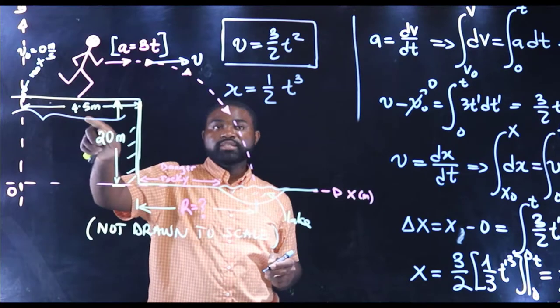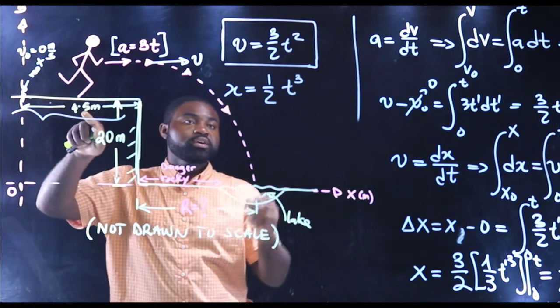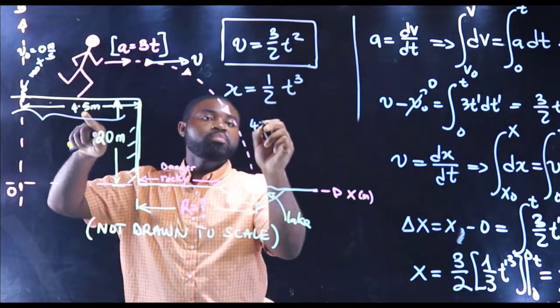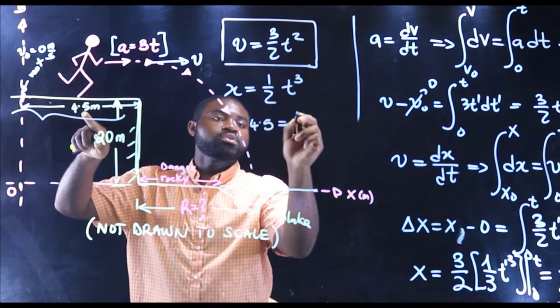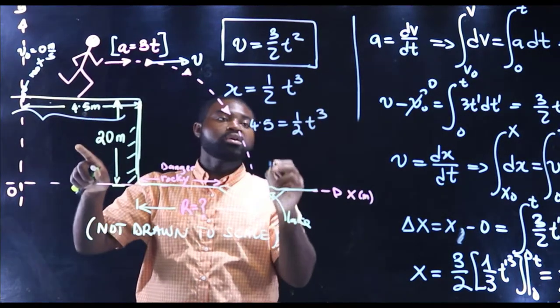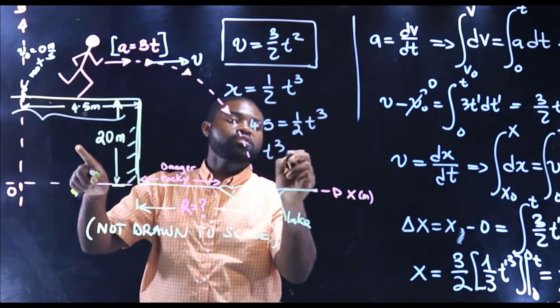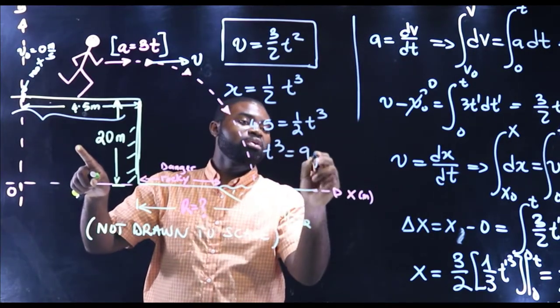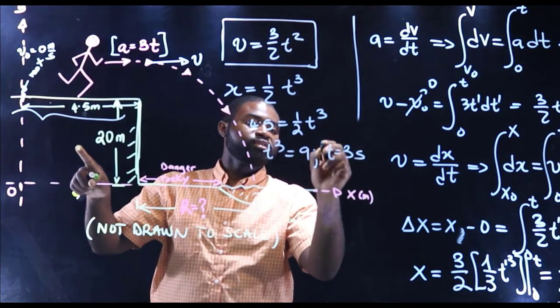But what is that x? x is 4.5. So this means that 4.5 is equal to one half t cubed. In other words, t cubed is equal to 9, which means that t is equal to three seconds.